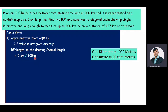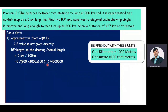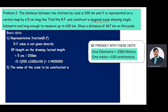The length on the drawing is five centimeters and the actual length is 200 kilometers. Converting 200 kilometers to centimeters: RF = 5 / (200 × 1000 × 100). After simplifying, the RF value is 1 by 40 lakhs.